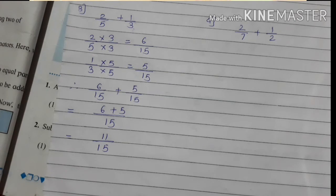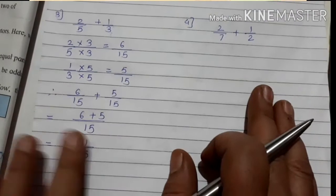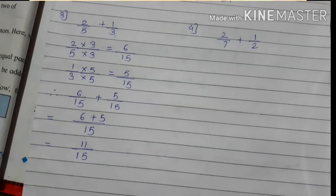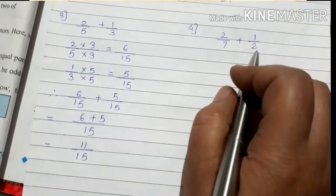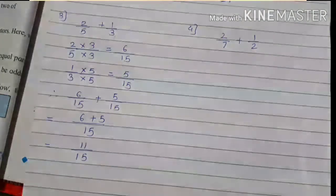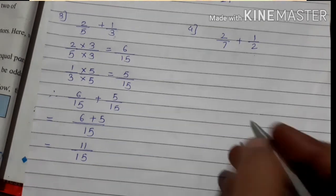Understood everyone? Now the fourth one: 2 upon 7 plus 1 upon 2. See the denominators 7 and 2. Is 2 in the 7 times table? No. Is 7 in the 2 times table? No. So in this case also we have to follow the cross multiplication method.